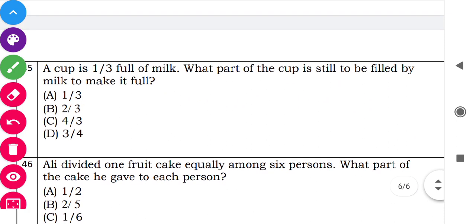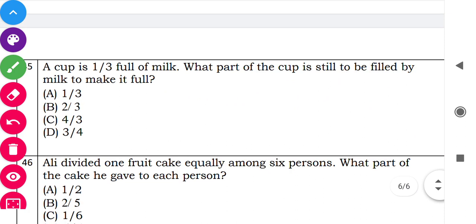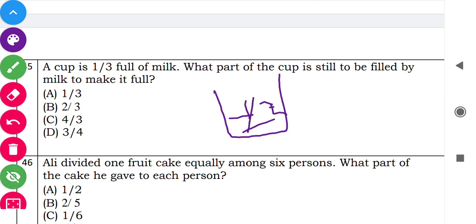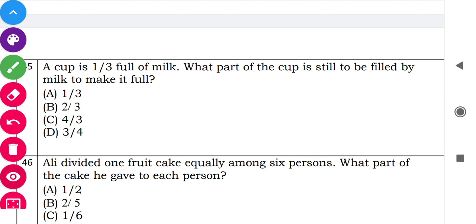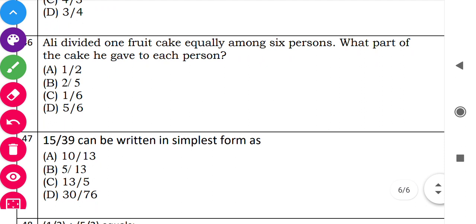Question 45: 'A cup is one-third full of milk. What part of the cup still needs to be filled to make it full?' Total minus filled: 1 minus 1 by 3 equals 2 by 3. So option B is correct — 2 by 3 of the cup still needs to be filled.